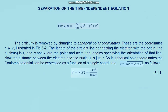The difficulty is removed by changing to spherical polar coordinates r, theta, phi, as illustrated in figure 6.2. The length of the straight line connecting the electron with the origin (the nucleus) is r, and theta and phi are the polar and azimuthal angles specifying the orientation of that line. The distance between the electron and the nucleus is just r, so in spherical polar coordinates the Coulomb potential can be expressed as a function of the single coordinate r, formula 6.11.